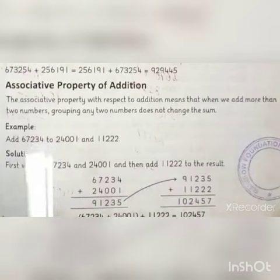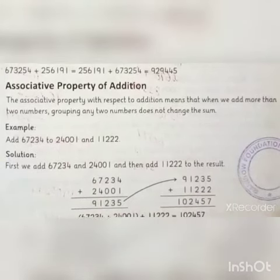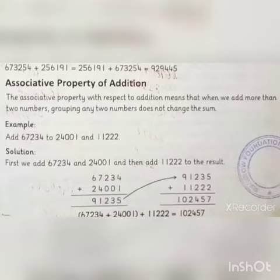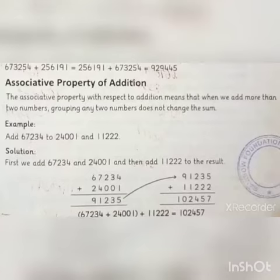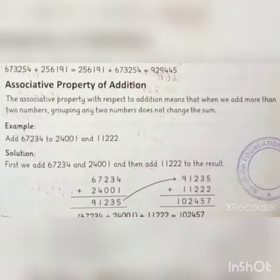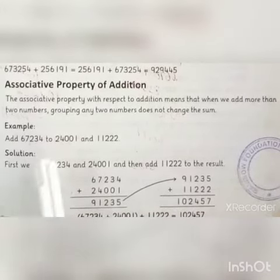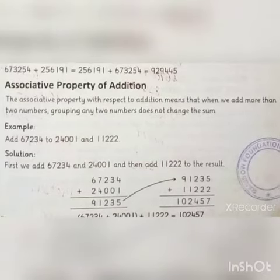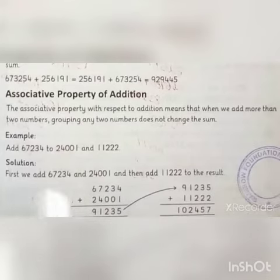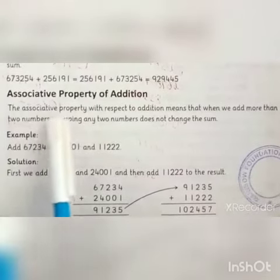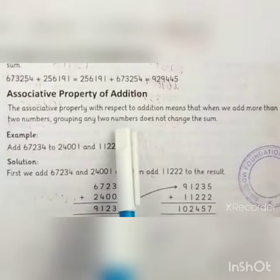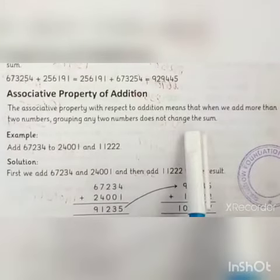Assalamu alaikum, bachon! Today is 18th January, Monday, and today we are starting our next lesson. Our next lesson is linked with the associative property of addition. Look at this — the book page number is 21, associative property of addition.